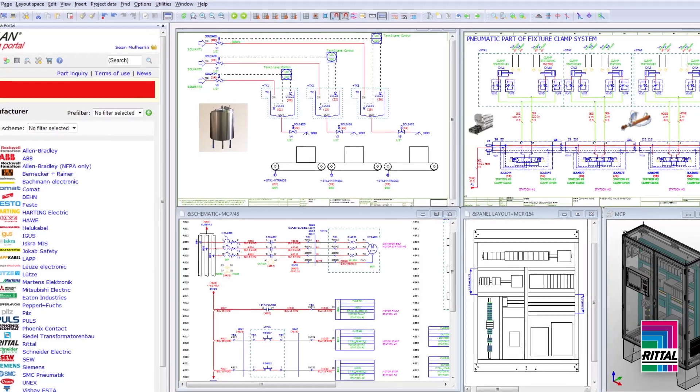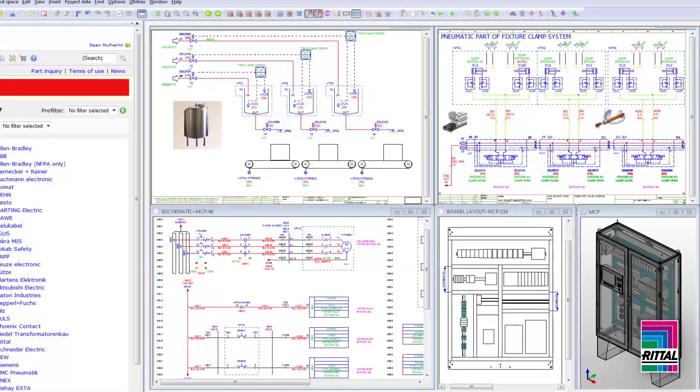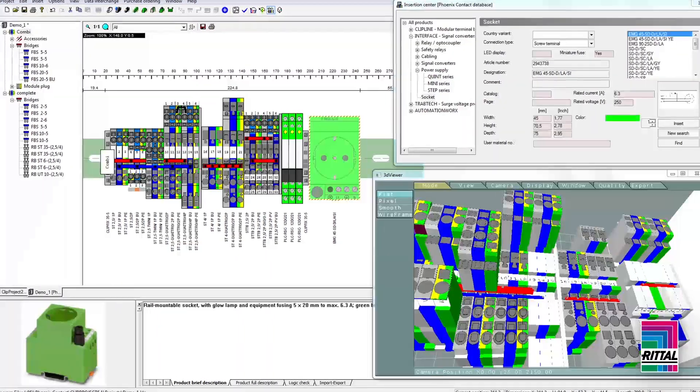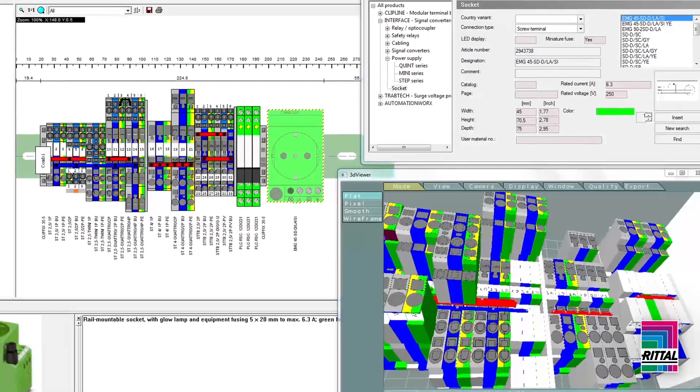ePlan also interacts with other manufacturers' equipment to increase efficiencies, like the CLIP project from Phoenix Contact that automatically selects correct terminals and marks labels.